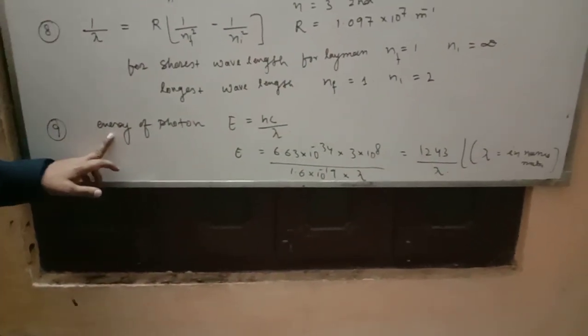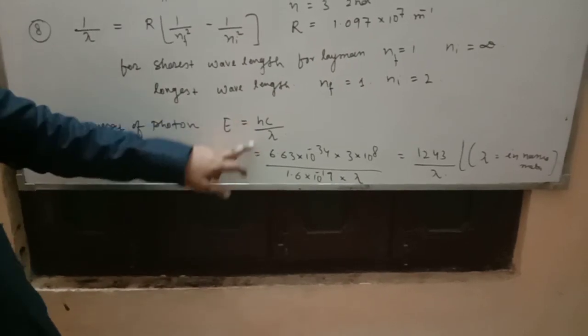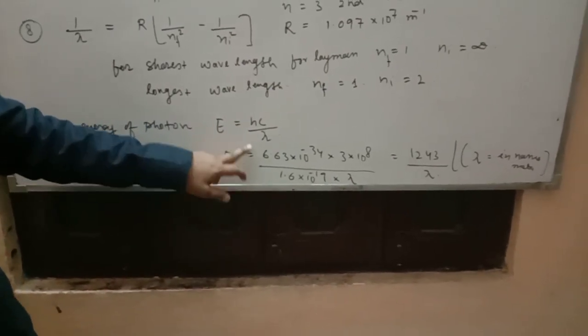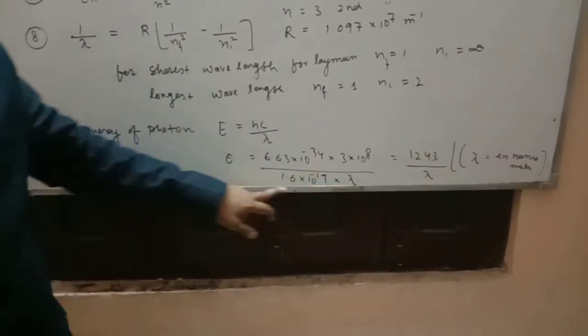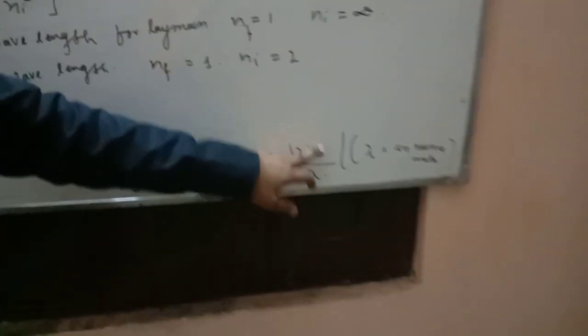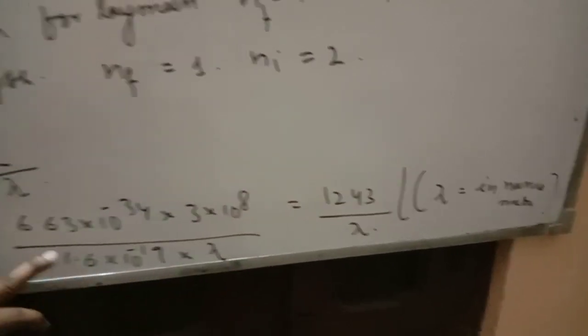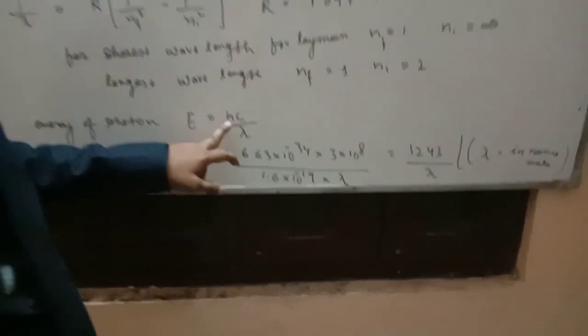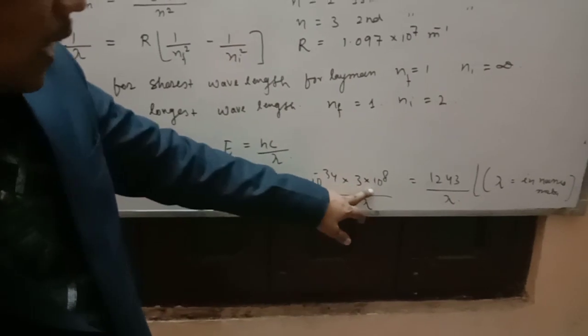Another important formula is energy of photons: E is equal to hc by lambda. When you put h and c, speed of light, your equation becomes 1243 by lambda. This is the data: Planck constant value and speed of light.